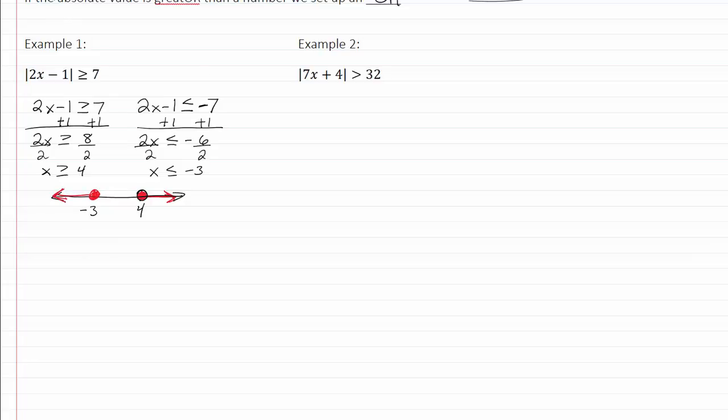Now for our solution, we are going from negative infinity to negative 3. We have the closed dot, so that means we have a bracket, union another closed dot, so we'll have another bracket, 4 to positive infinity. And that's our interval notation for that solution.